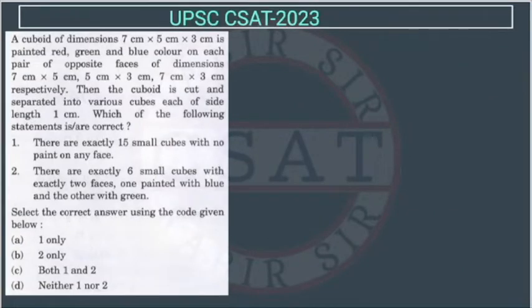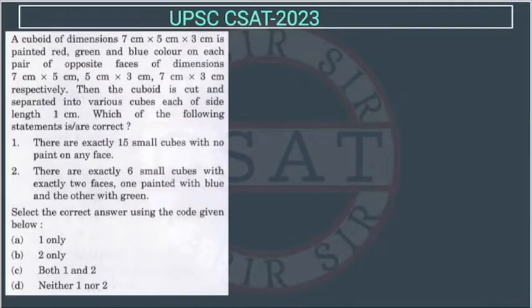Now see this question. This question is from Cuban Diocese. A cuboid of dimension 7×5×3 is painted red, green and blue color on each pair of opposite faces of dimension 7×5, 5×3.